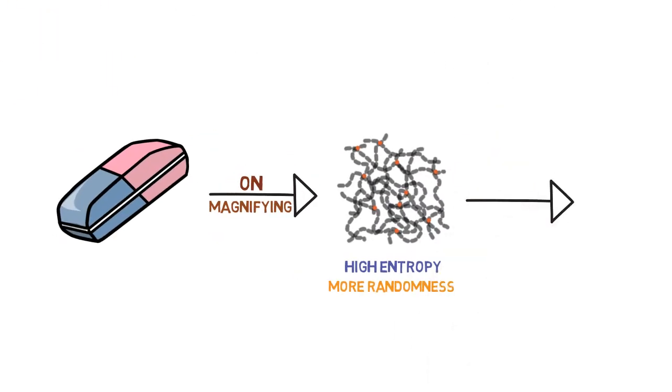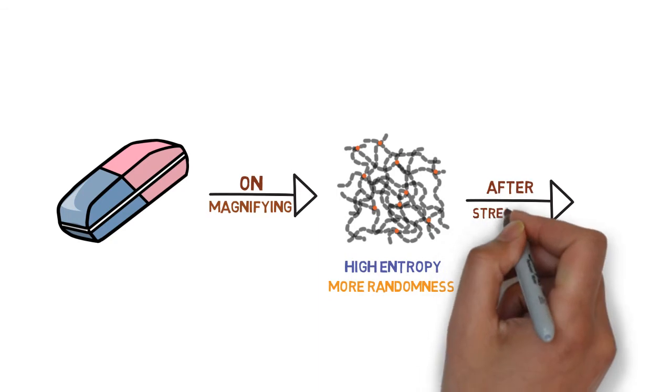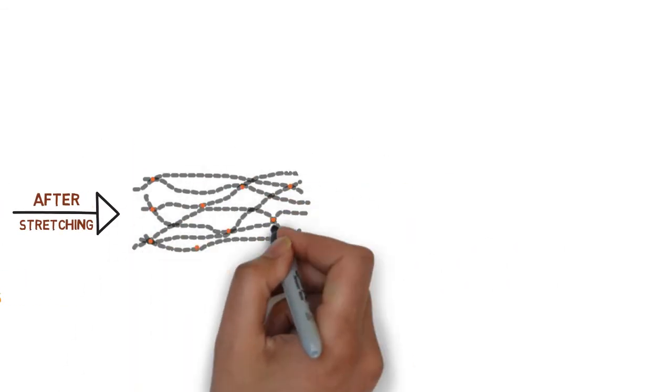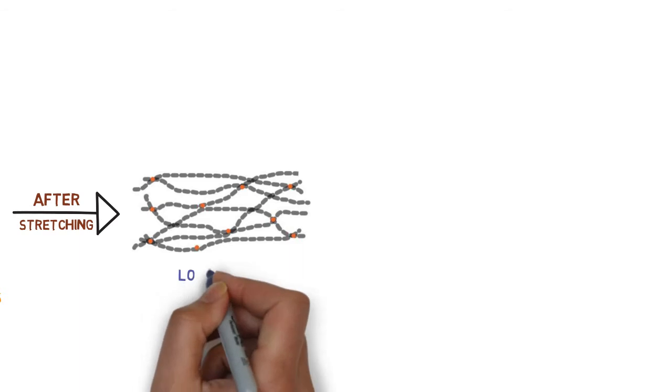But when the rubber is stretched, the chains become aligned in one direction. When the chains are aligned, they are ordered. That is, they don't have as much entropy as they did before the rubber was stretched.